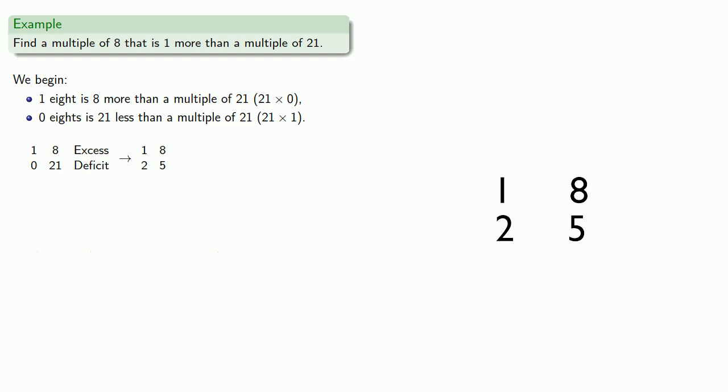And now we can continue the process. We'll subtract 5 from 8, and we can't subtract another 5. So multiply our corner numbers and add, and replace. And again we can read this: 3 eights is 3 more than a multiple of 21, 2 eights is 5 less than a multiple of 21.